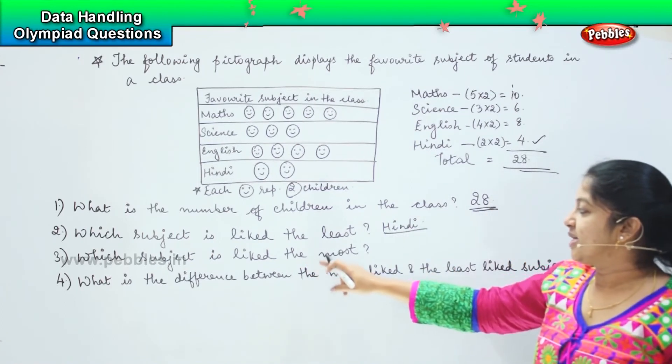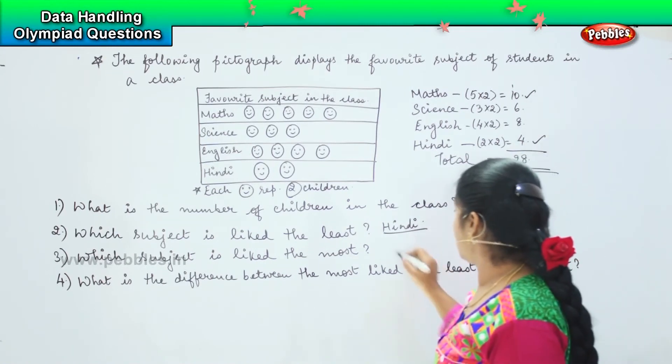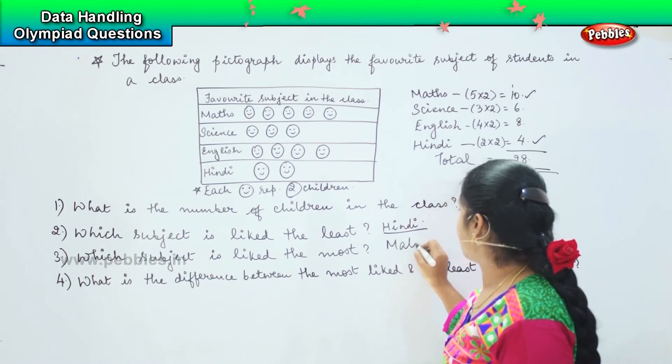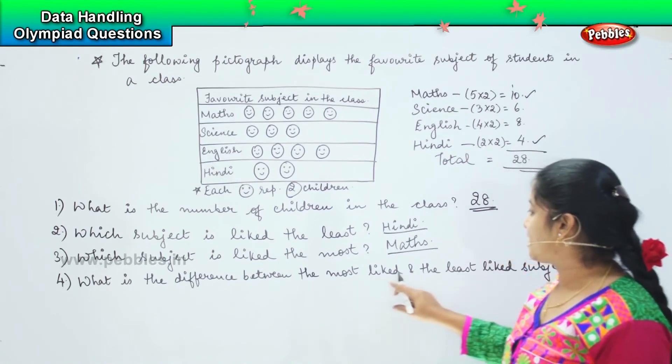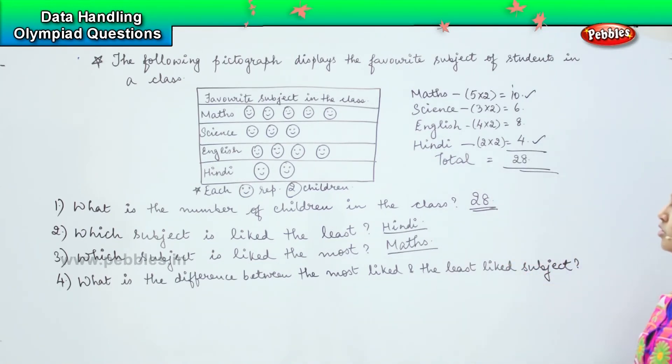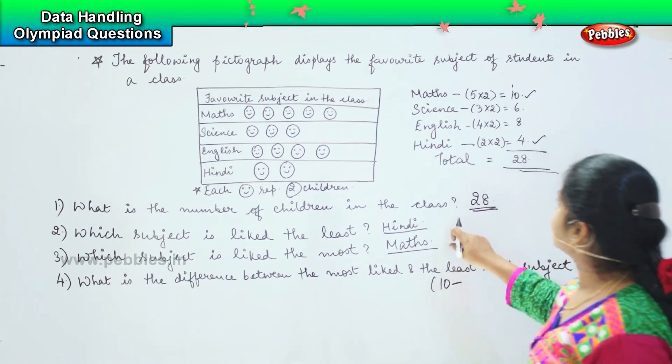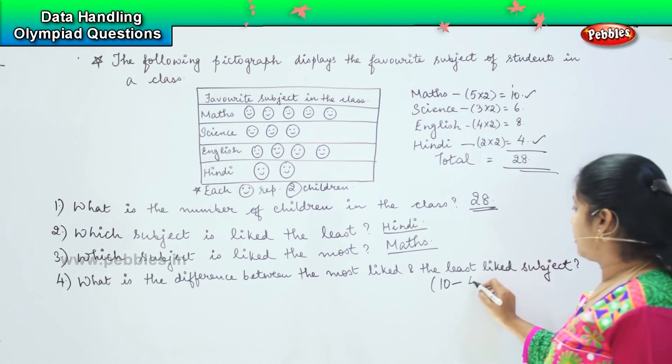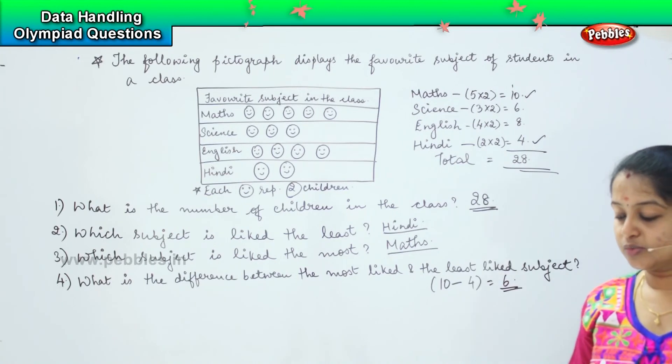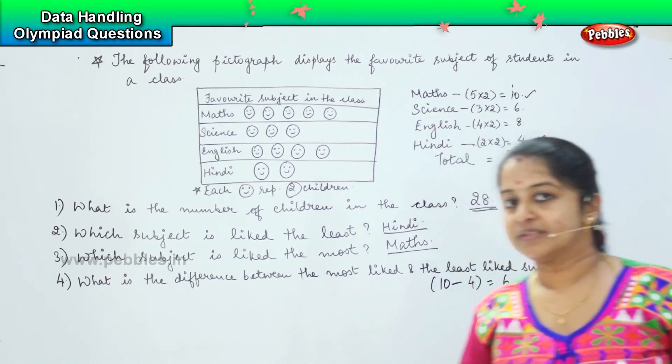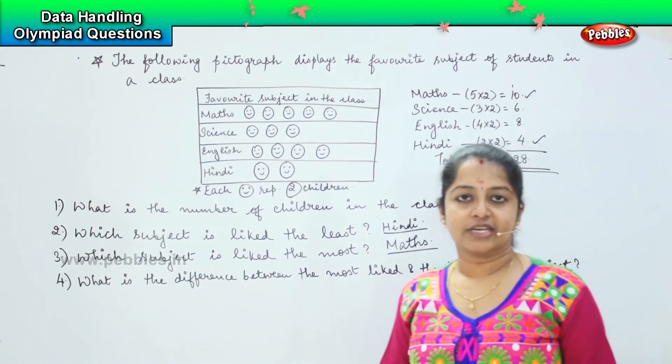Which subject is liked the most? It is Maths, so your answer is Maths. What is the difference between the most liked and the least liked subject? The most liked is Maths which is ten, and the least liked is Hindi which is four, so your answer is six. It was very easy, right? So shall we solve the next question? Ready for the next question, children?